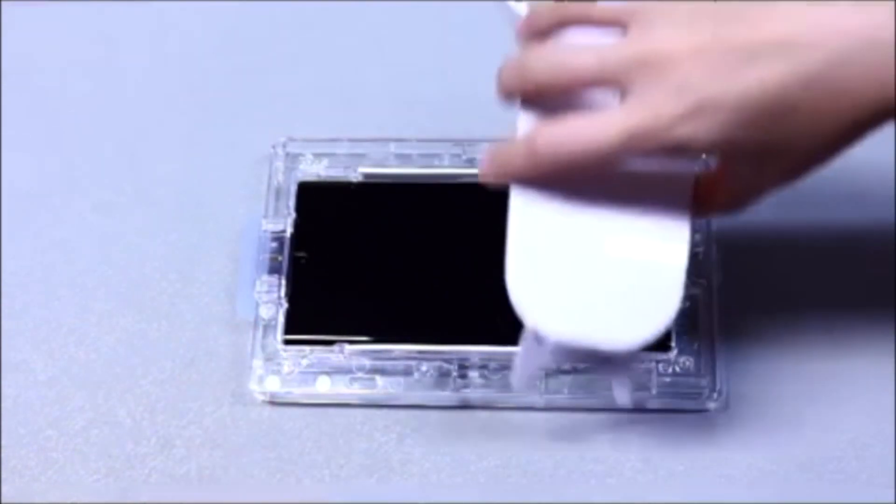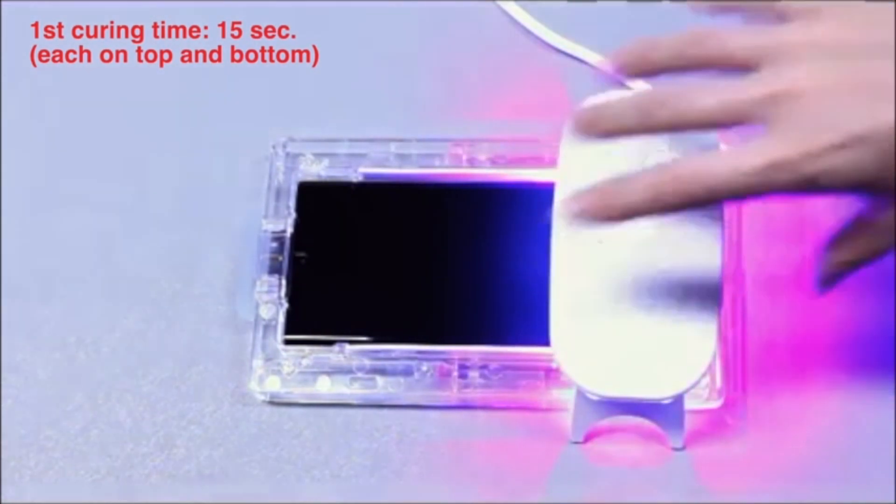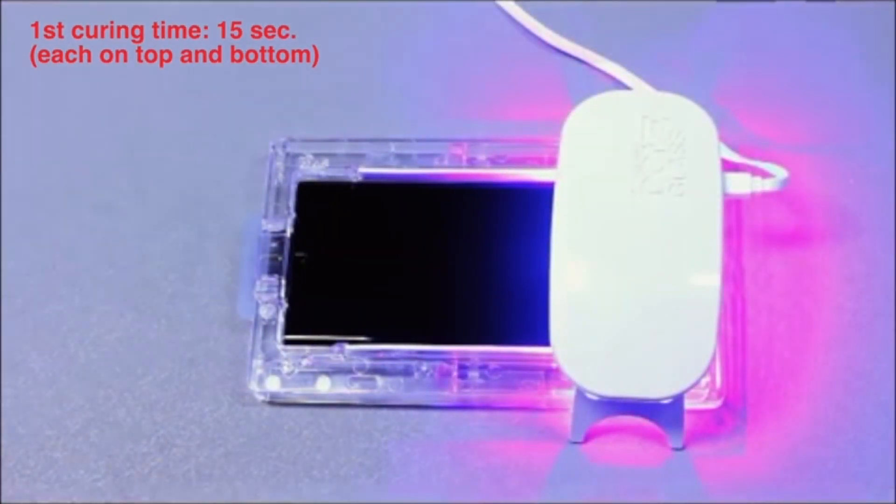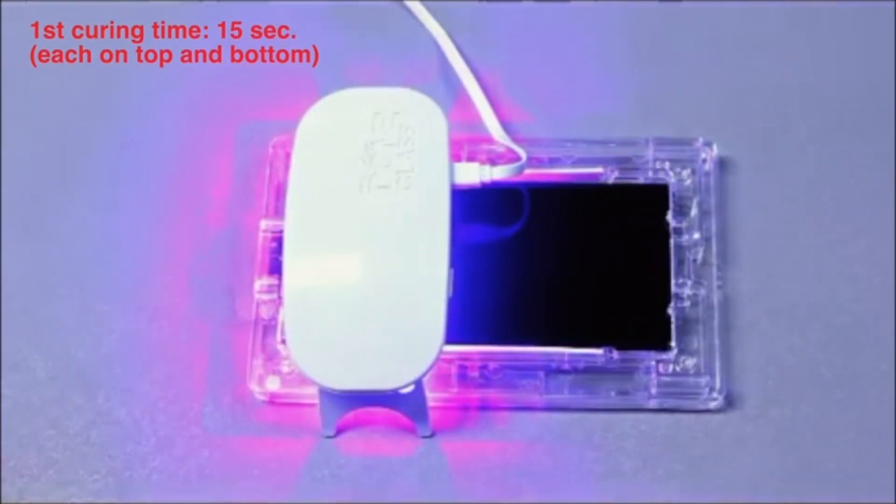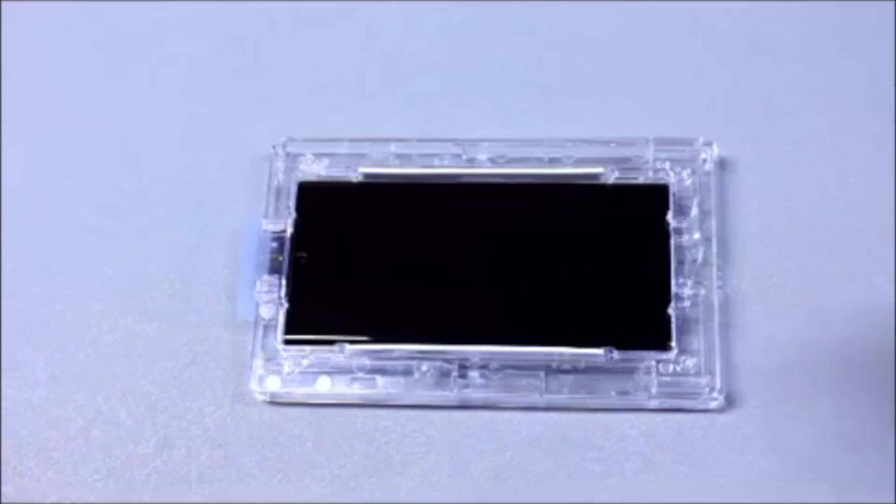Next, we will cure the screen onto the device. Place the UV light at the bottom and cure for 15 seconds. Then, move it to the top and cure for another 15 seconds.